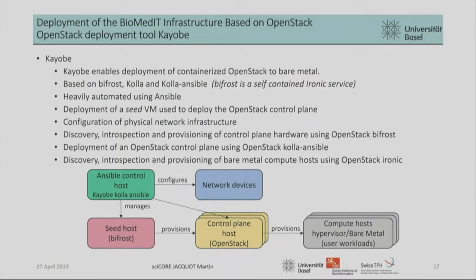We chose a tool called Kayobe to deploy OpenStack. This is provided by a company called StackHPC and is available for free. Kayobe enables the deployment of a containerized OpenStack to bare metal. It is based on Bifrost and Kolla-Ansible. How it works: we have a first host, our Ansible control host, where we install Kayobe and Kolla-Ansible. It is heavily automated — almost all processes are automated, though sometimes a few things don't work as expected.